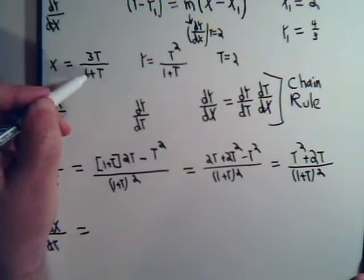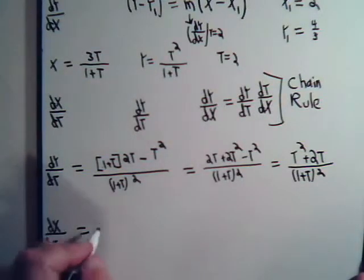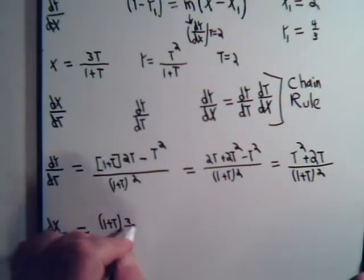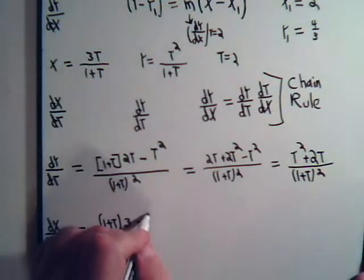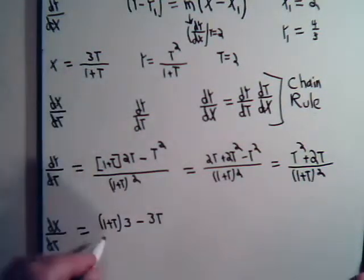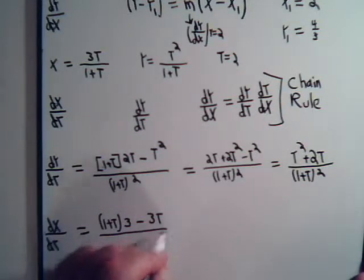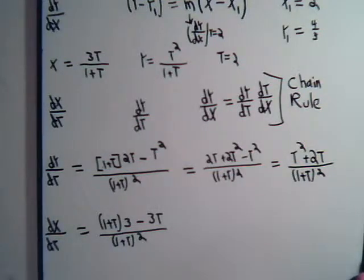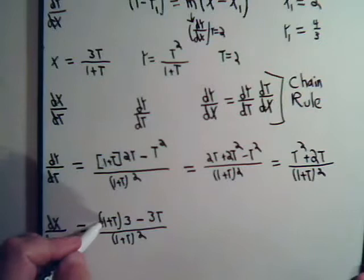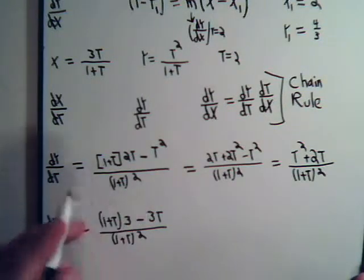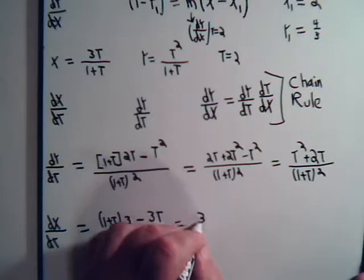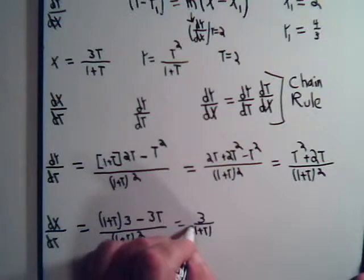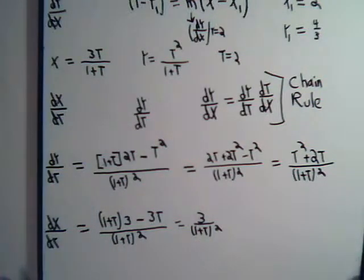That's this times the derivative of this, so you have 1 plus t times 3, minus this times the derivative of that, and that's just 1, divided by 1 plus t squared. That's dx/dt. Here we have 3 plus 3t minus 3t, so this will equal 3 divided by 1 plus t squared.